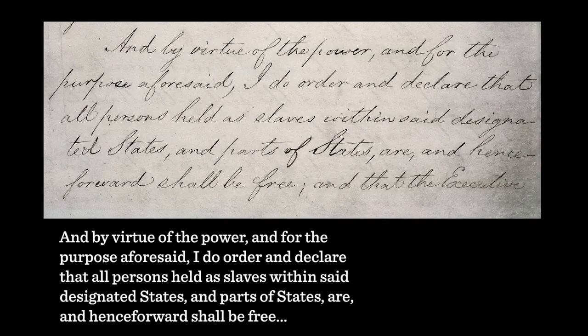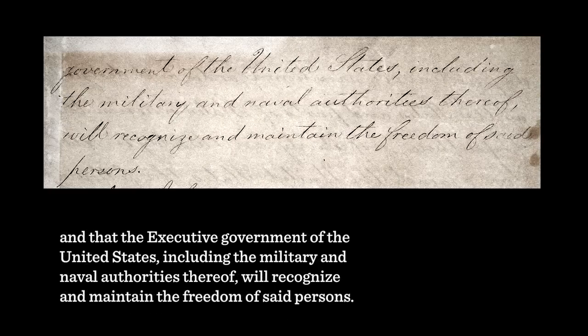Then he gives the full emancipation sentence: 'And by virtue of the power, and for the purpose aforesaid, I do order and declare that all persons held as slaves within said designated states and parts of states are and henceforward shall be free, and that the executive government of the United States, including the military and naval authorities thereof, will recognize and maintain the freedom of said persons.' What Lincoln is doing is asserting his authority as the executive of the nation, invoking his full war powers as commander-in-chief. Congress and the courts are not mentioned in this document — this is an executive policy.